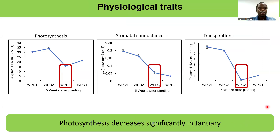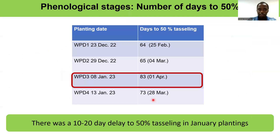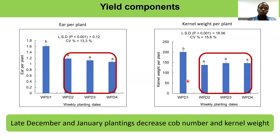From the physiological traits, we observed a significant decline in photosynthesis, stomatal conductance, and transpiration at the weekly planting of date three, which corresponds to January. We also observed a delay in the number of days to reach flowering on the January plantings as compared to the other planting dates.